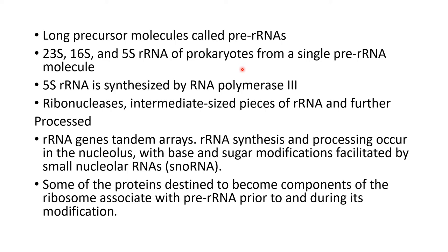In eukaryotes, the precursor ribosomal RNA gives rise to 5S ribosomal RNA, which is synthesized by RNA polymerase 3. RNA polymerase 1 synthesizes 28S, 5.8S, and 18S ribosomal RNA. RNA polymerase 2 synthesizes messenger RNA and some small RNAs, while RNA polymerase 3 also synthesizes tRNA. The 5S ribosomal RNA undergoes processing independently from the other three species of ribosomal RNA.